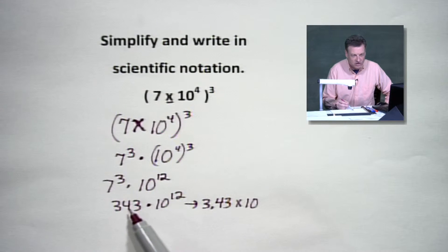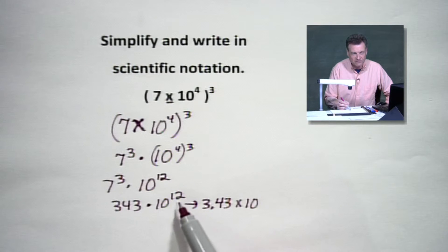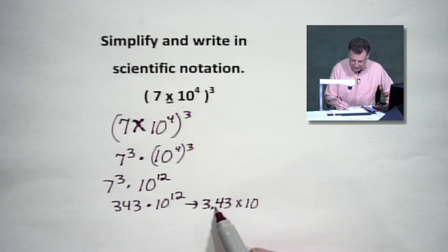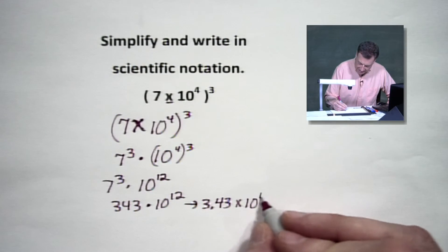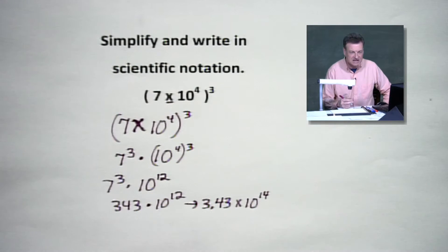Which means we've got to compensate for it over here. We've got to move it up. How many powers did we move? We moved two decimal places. So we've got to add two to that 12 over there, balance it out, and that's going to give us ten to the fourteenth.